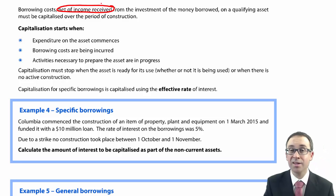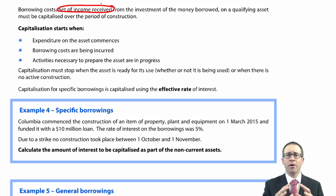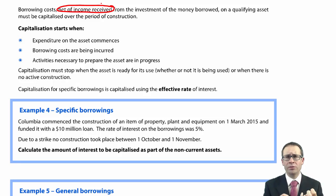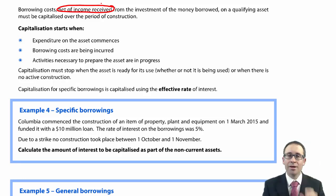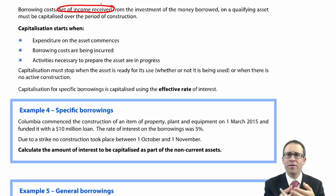You take out a loan and incur interest. However, you might borrow a significant amount of money to fund the whole project but may not need all of those funds immediately. So you incur the full amount of interest, but then you invest some of that money and receive interest income. You take the interest expense, net off the interest income, and it is the net amount that is capitalised.